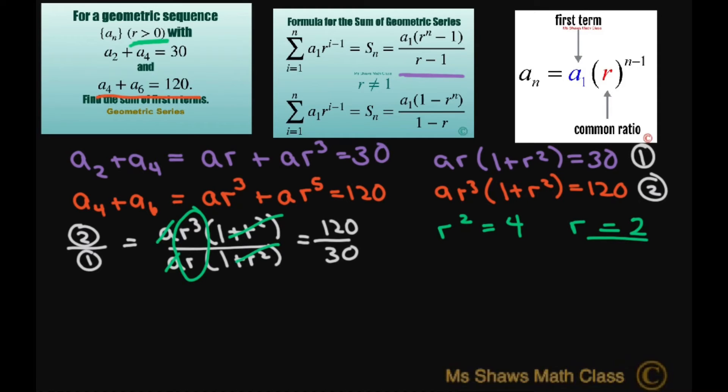Now if R is 2, we can substitute it back into equation 1. So let's substitute it into this equation. So we have a times 2 and 1 plus 2² equals 30. So this is going to be 5 times 2, so that's 10a equals 30. So a equals 3.